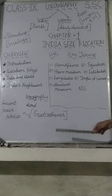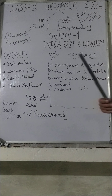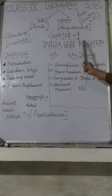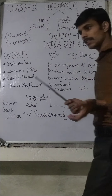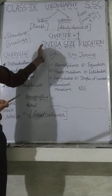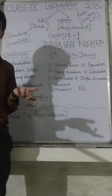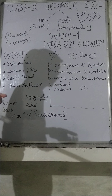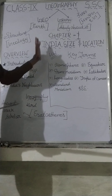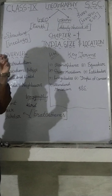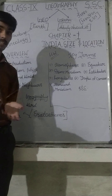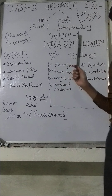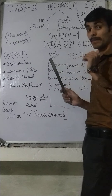I hope the basic word meaning of geography is clear to all of you. Now, the first chapter of geography is India: Size and Location. Friends, this chapter is very easy because we all know India — India is a country. We will study this chapter in detail from the beginning onwards.